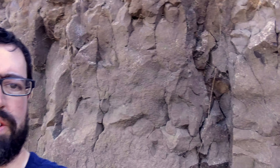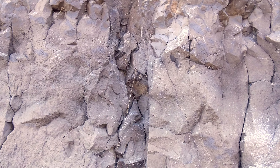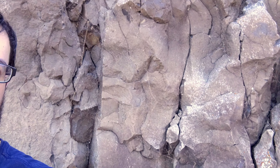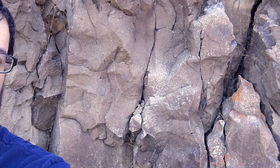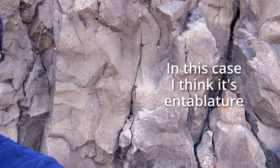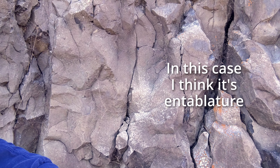Sometimes it can be tricky to tell what's entablature and what's colonnade, especially in a case like this where there are some linear features and some blockiness, but they're not really well developed — so either they're poorly developed columns or it's more hackly jointed entablature.